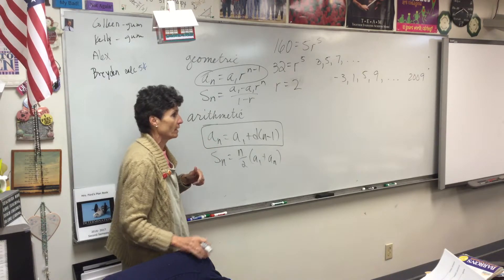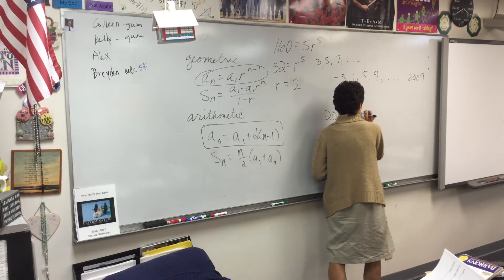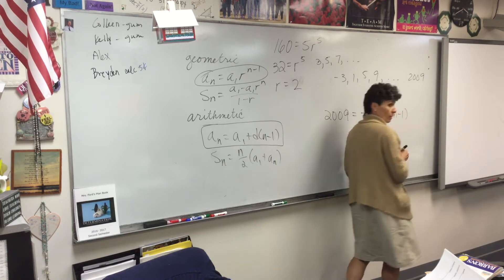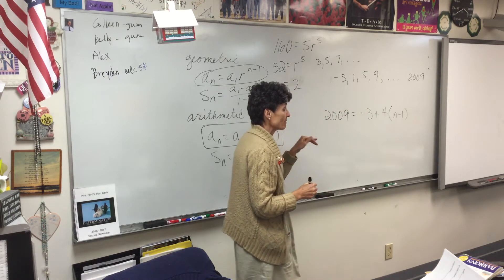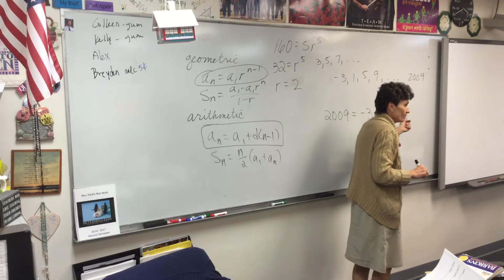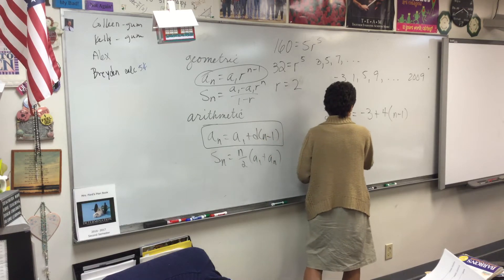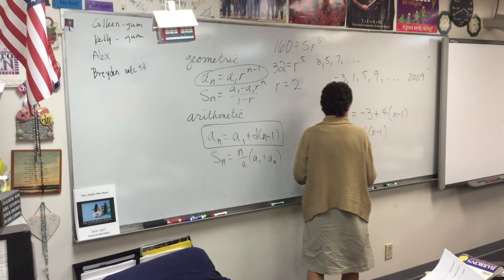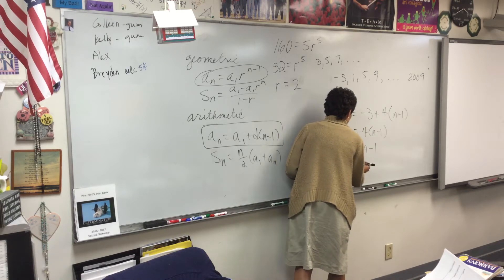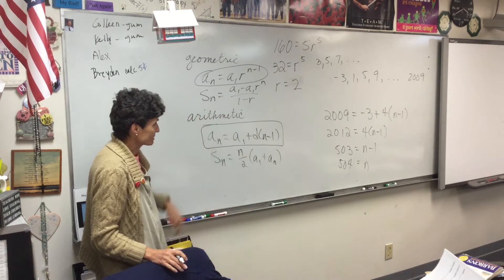So, 2009 equals negative 3 plus 4 times n minus 1. Now, what does n stand for in this formula? The number of terms. So, I want to know, is this the hundredth term? What is the n value? All right, so let's solve that. I'll add 3. And I'll divide by 4. We'll end in 504. I think if my arithmetic is accurate.